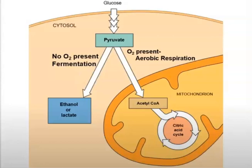Welcome back. Let's talk about what happens to glucose if the cell is experiencing low oxygen levels. The glucose is transported into the cell and glycolysis is still going to take place — glucose is broken down into pyruvate. Under low oxygen conditions, the biochemical pathways are going to remain within the cytosol, meaning it's going to stay outside the mitochondria.